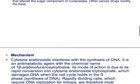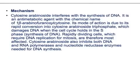Cytosine arabinoside is the first of a series of cancer drugs that alter the sugar component of the nucleosides — other cancer drugs modify the base. The mechanism of cytosine arabinoside interferes with the synthesis of DNA. It is an antimetabolic agent, and its mode of action is due to its rapid conversion into cytosine arabinoside triphosphate, which damages the DNA when the cell cycle holds in the S-phase. Rapidly dividing cells requiring DNA replication for mitosis are therefore most affected. Cytosine arabinoside also inhibits both DNA and RNA polymerases and nucleotide reductase enzymes needed for DNA synthesis.